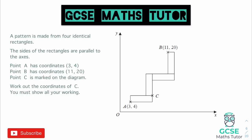It says a pattern is made from four identical rectangles and we can see them there on the coordinate grid. The sides of the rectangles are parallel to the axes, and then it tells us the coordinates of point A and B, which we can see on the diagram. Point C is also marked. Work out the coordinates of C and you must show all your working. For this question, we haven't got the grid lines drawn on our coordinate grid, so we can't just count along. We need to actually figure out the length and width of each of these rectangles, and we can do that by looking at the distances between A and B.